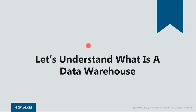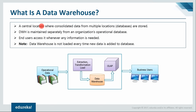A data warehouse is a central location where consolidated data from multiple locations or databases is stored. This is exactly what I explained earlier - you have data coming from multiple data sources, you consolidate all the data into one single place. The data warehouse is maintained separately from an organization's operational database. The reason data warehouses are stored separately is so the data should not get affected - your operational data on one end and your data warehouse separately, like a backup.